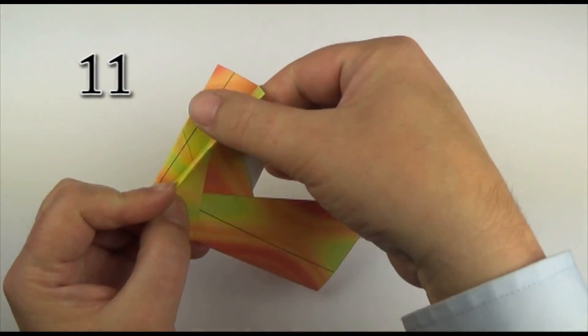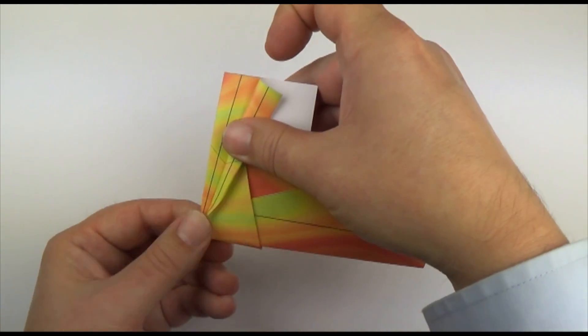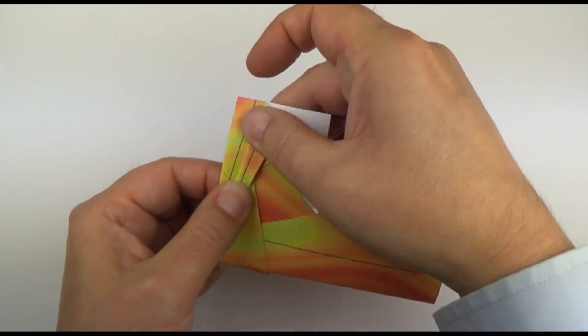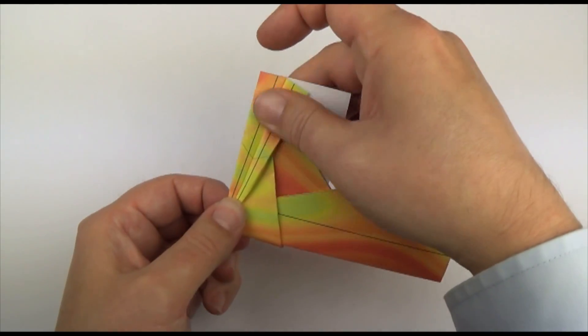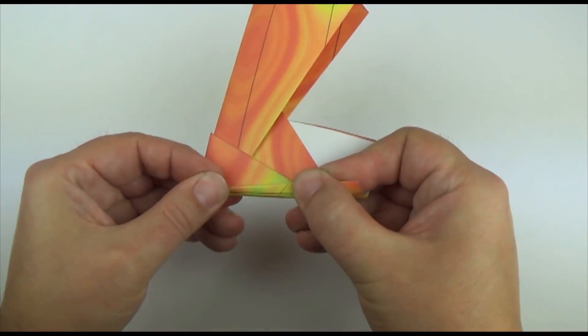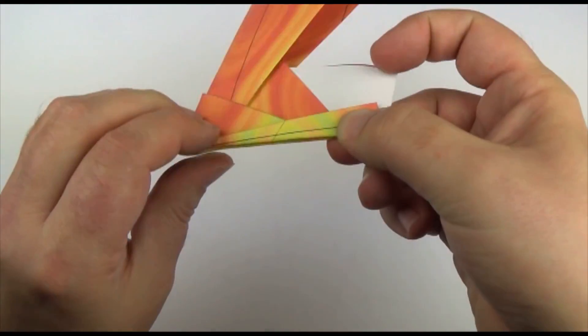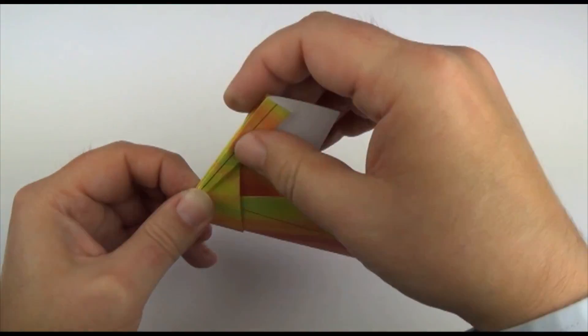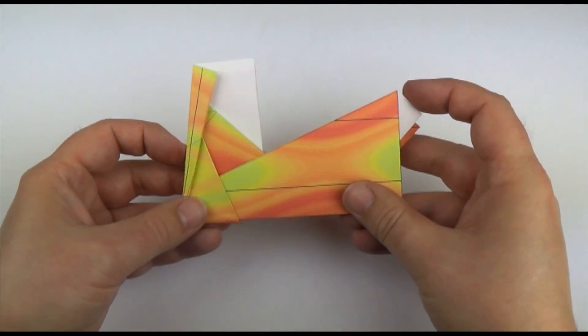I'm just going to shape the front wing. So I'm going to fold the edge over diagonally, fold it and crease. Same behind. So we've now changed that from a flat wing to having a slight angle.